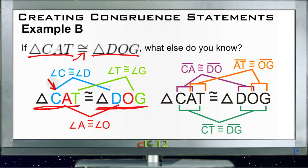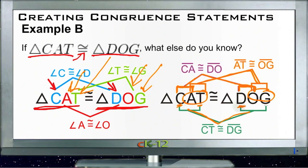We know that because of the order they're written in, angle C corresponds to angle D, and angle A corresponds to angle O, and angle T corresponds to angle G. So we know all the angles and which ones correspond where. We also know which sides correspond. We can see that side CA, which is marked right here in purple, corresponds to side DO, which is marked over on the other side.